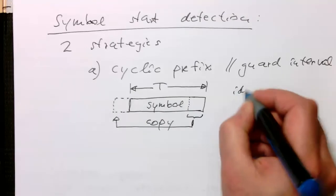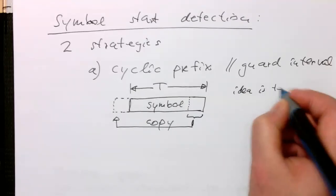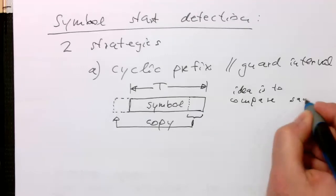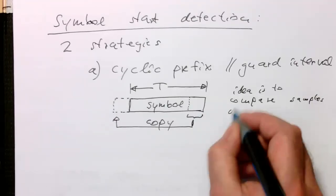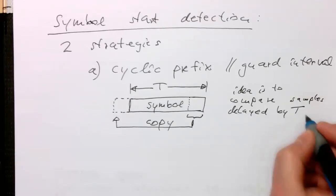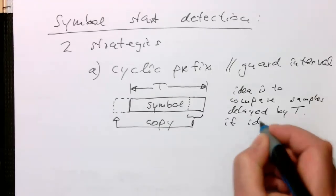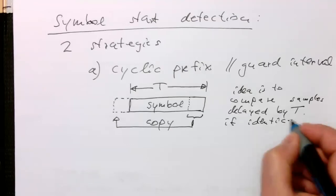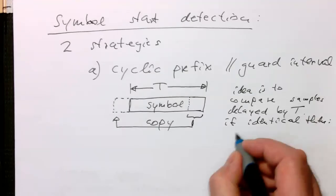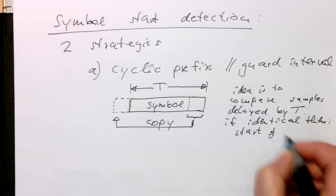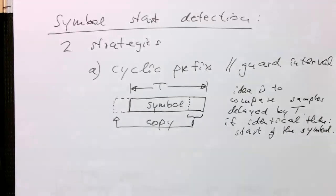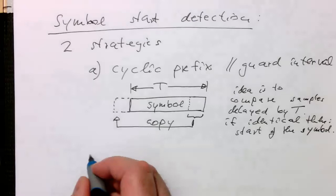The idea is to compare samples delayed by T. If identical, then that's the start of the symbol. Simple as that. A very simple, ingenious idea.